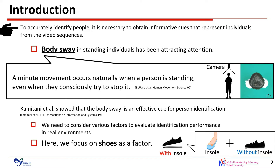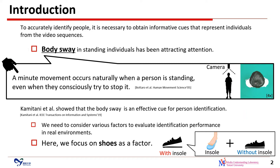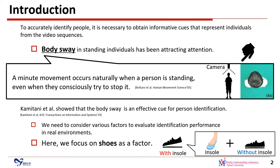To accurately identify people, it's necessary to obtain informative cues representing individuals from the video sequences. Body sway in standing individuals has been attracting attention in recent years. Body sway is a small movement occurring naturally when a person is standing, even when they consciously try to stop it. The person slightly moves even though the human body appears stationary. The existing study showed that body sway is an effective cue for person identification.